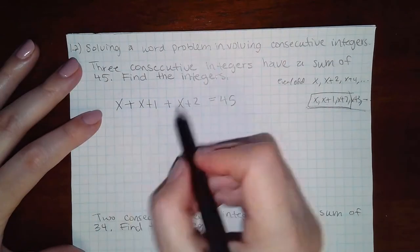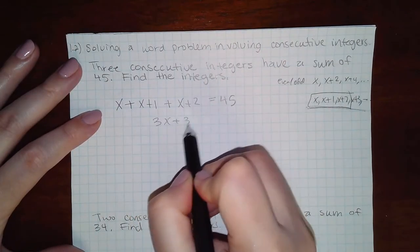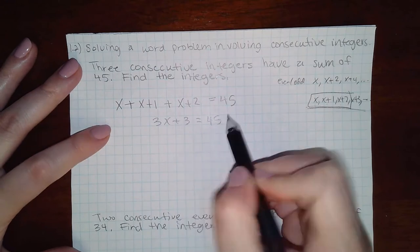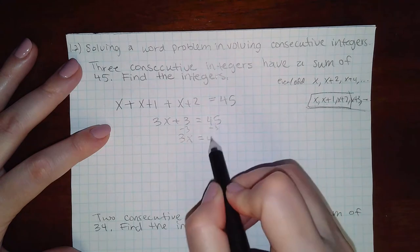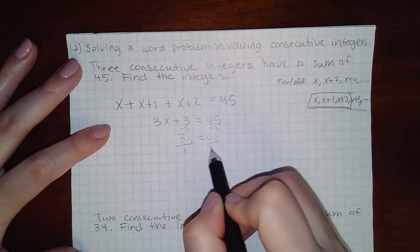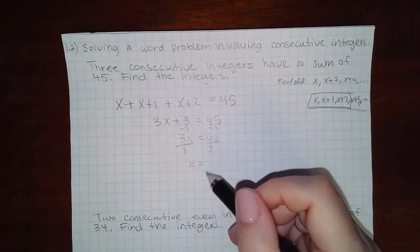And then if I combine my like terms I get this equation and if I start to subtract three on both sides and then if I divide by three on both sides I end up with 14.